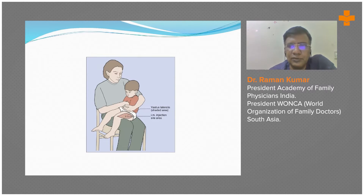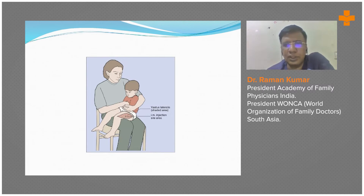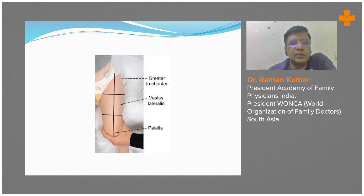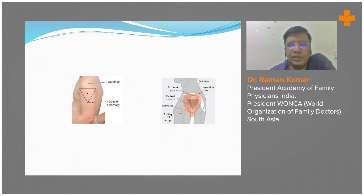For injections, it is advisable to give on the non-dominant side of the child. If there is any side effect or local problem — even in the unlikely event of limb loss — it would be on the non-dominant side. This is a general principle taught to all medical students. To locate the vastus lateralis, identify the greater trochanter at the hip and the patella, and inject in the area between them.